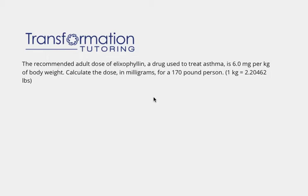The recommended adult dose of alloxephalin, a drug used to treat asthma, is 6.0 milligrams per kilogram of body weight. Calculate the dose in milligrams for a 170-pound person, given the conversion that 1 kilogram is 2.20462 pounds.